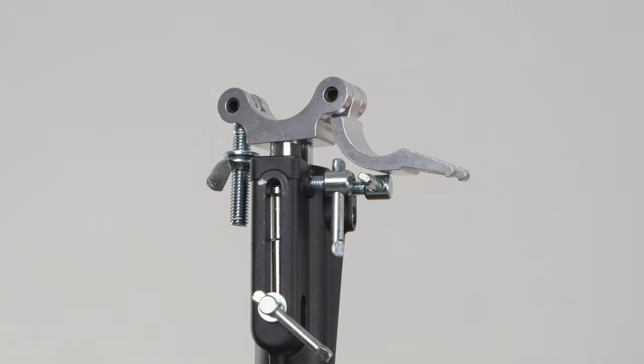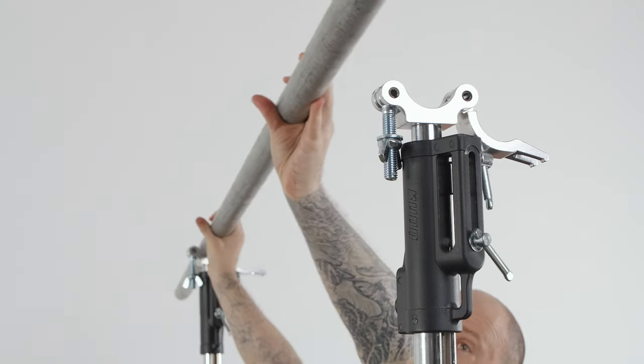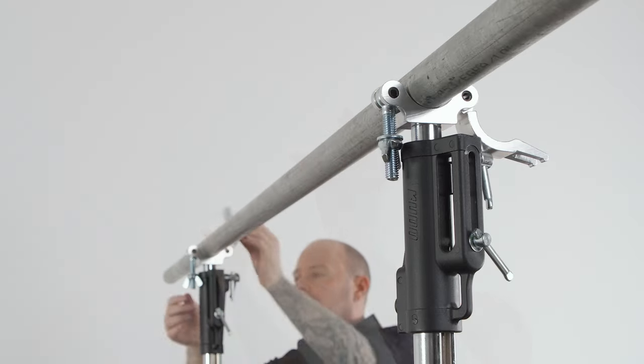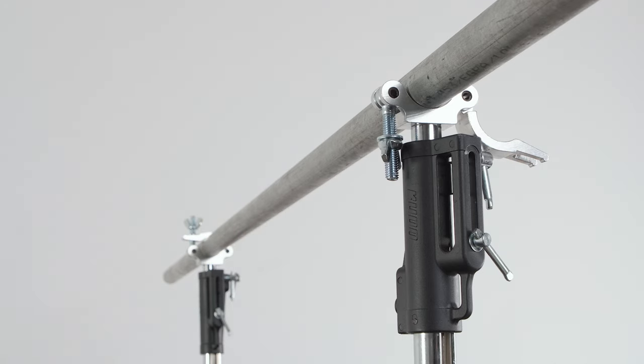Open the upper locking jaw so it can receive the length of pipe, and repeat with the other clamp. Lay the length of pipe across both couplers. Close the locking jaw over the top of the pipe and repeat with the other clamp.